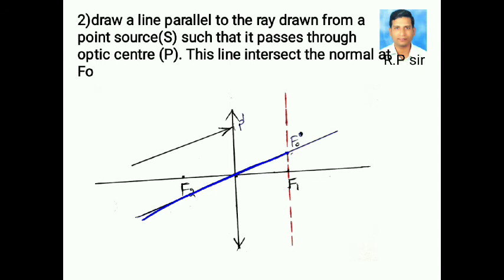we have to draw a parallel line to the incident ray in such a way that it passes through optic center and intersects the normal at F0.